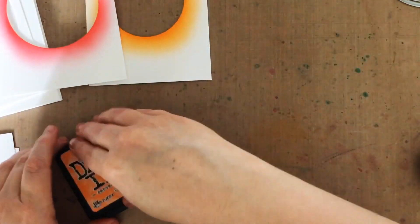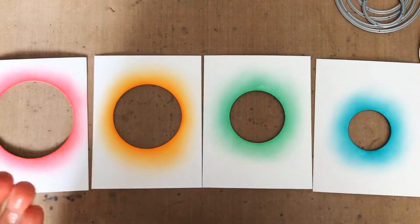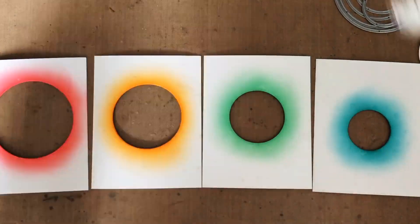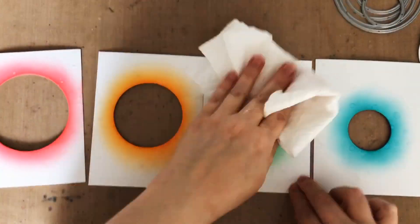Then on the next one, I'm going to do cracked pistachio, and then finally peacock feathers. And once I've got all of my inking done, I'm going to lay out those panels and add a little bit of clean water splatter just to create texture. So I like to spray the water onto my hand and then kind of shake it onto the panels before I use a paper towel to mop up any excess water and ink.